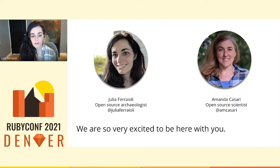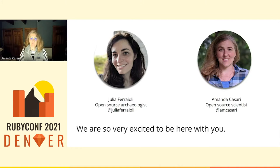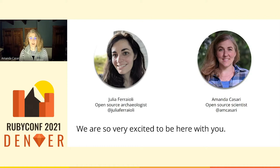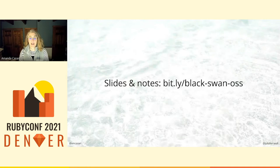And hi, I'm Amanda Kassari — a white woman with short, light hair wearing a gray vest and striped shirt. I'm fortunate that most recently my work is focused on understanding the nuances of open source, where it works, where it needs support, and where things are tucked away in the back room that we didn't know were holding up the internet. Slides and speaker notes are available at bit.ly/black-swan-OSS.